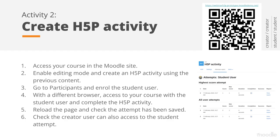Now that we've created something in the Content Bank, it's time to put it into the actual Moodle course. We're going to create an H5P activity. What we are going to do is create an H5P activity in a course, and then access with a student account to see what happens when the student completes the H5P content — to know the benefits of using this H5P activity. The hardest part is creating the H5P content; once you have it created, creating the activity is quick.